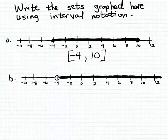So here's the same set — the set of all real numbers between minus 4 and 10, including minus 4 and 10 — written out in interval notation. You can see it's very efficient to write that set in interval notation; it's not nearly as difficult as graphing that set on a number line.